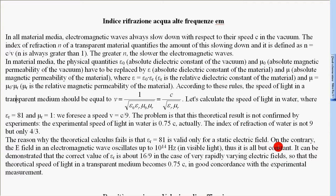It can be demonstrated that the correct value of εr is about 16 ninths in the case of very rapidly varying electric fields, so that the theoretical speed of light in a transparent medium becomes 0.75c in good concordance with the experimental measurement.